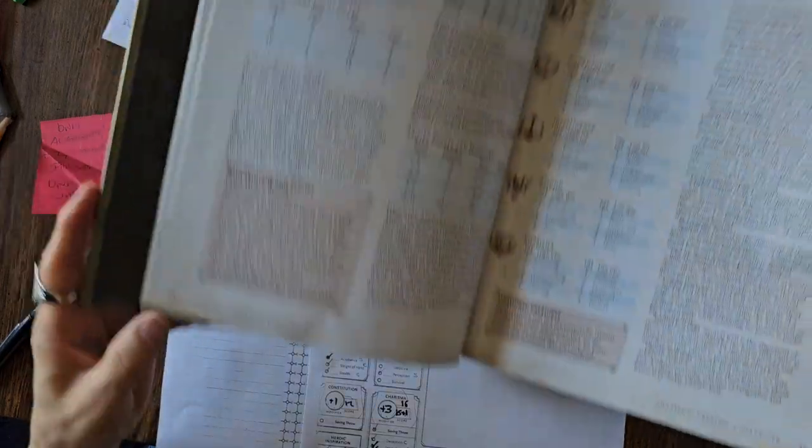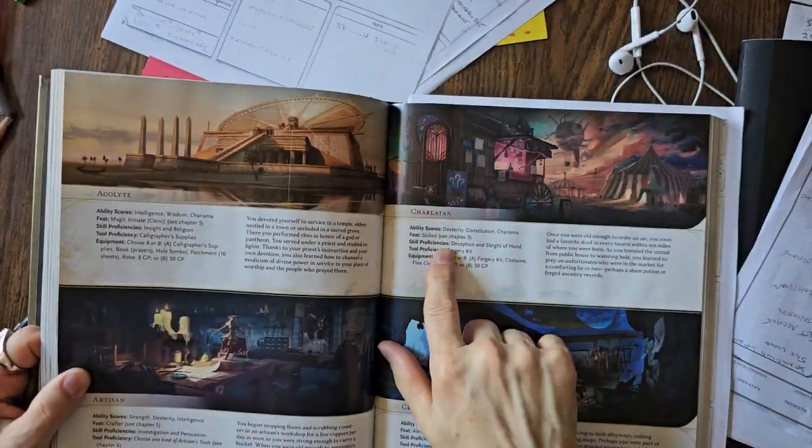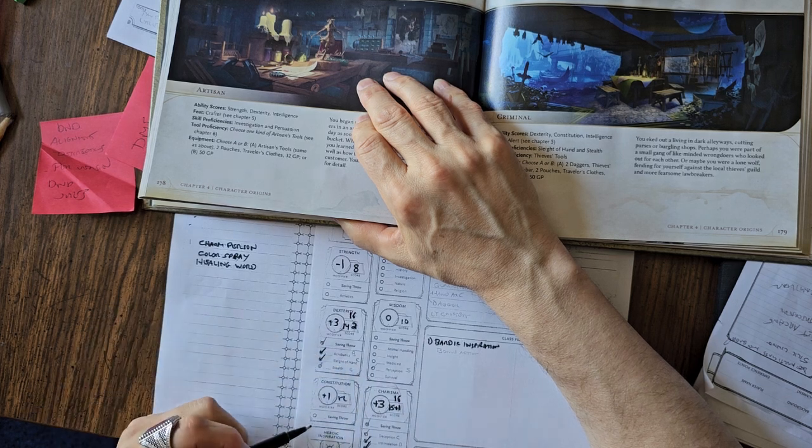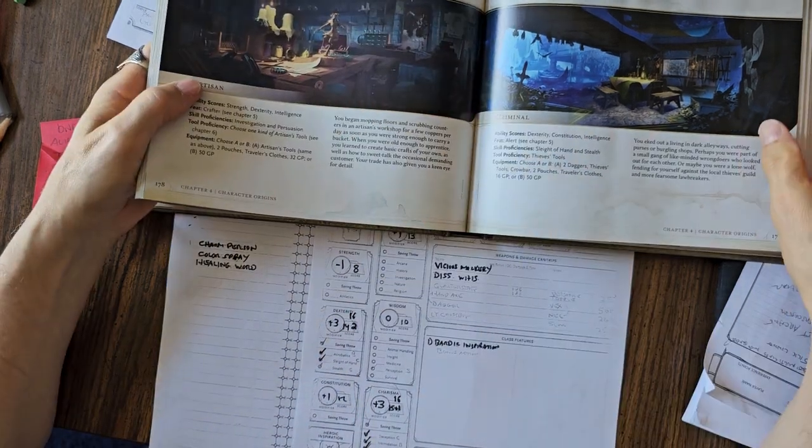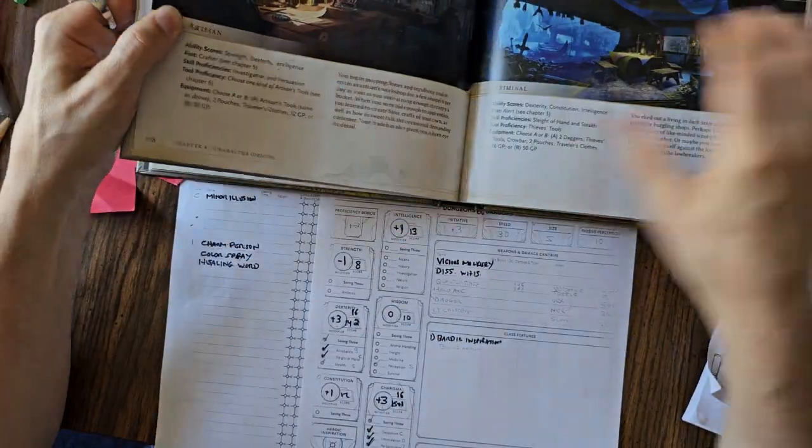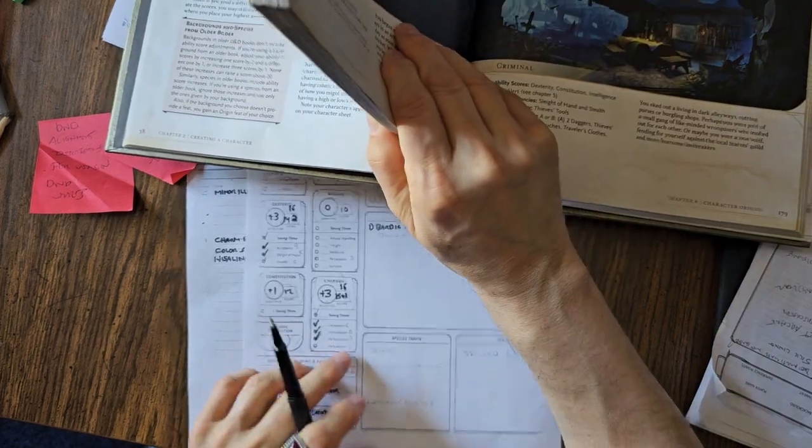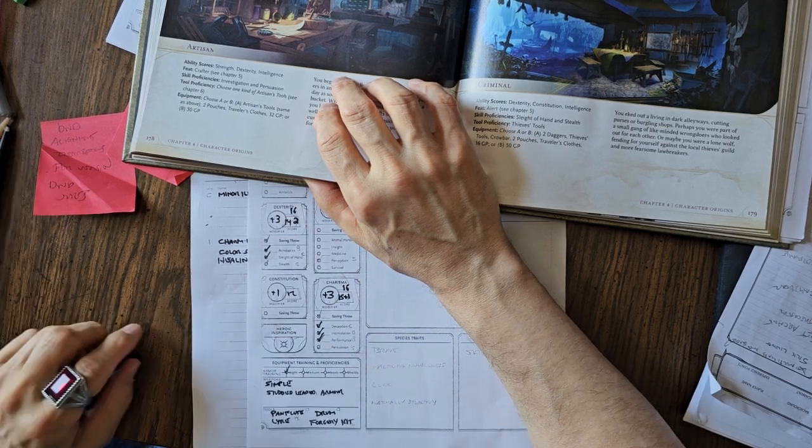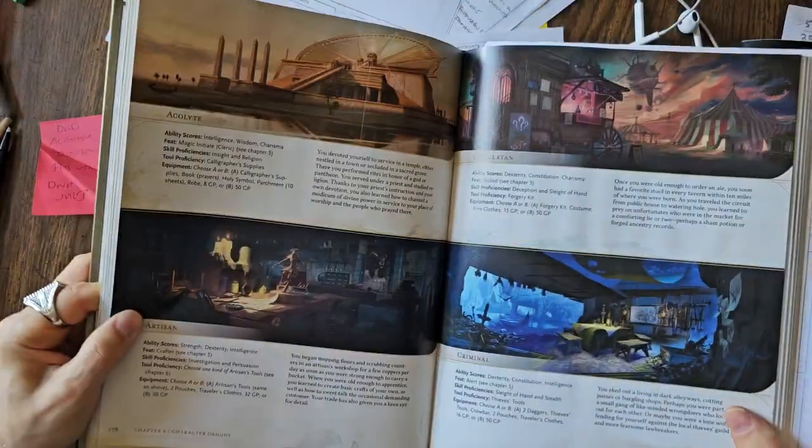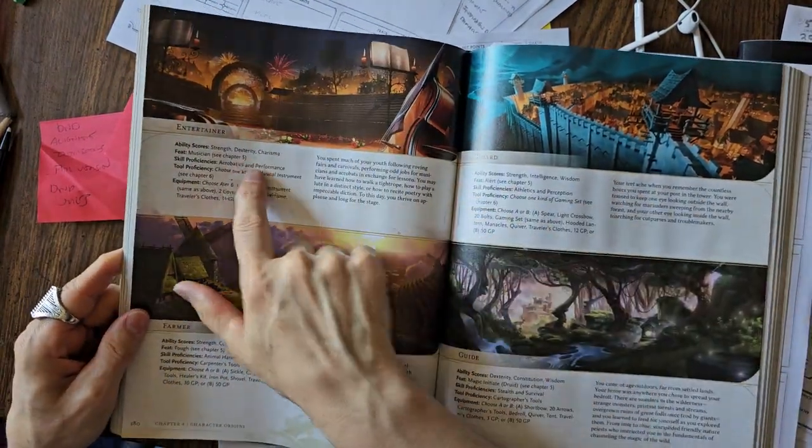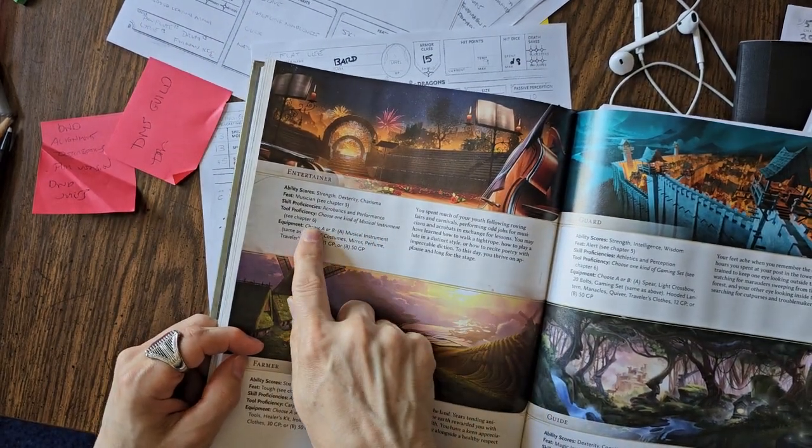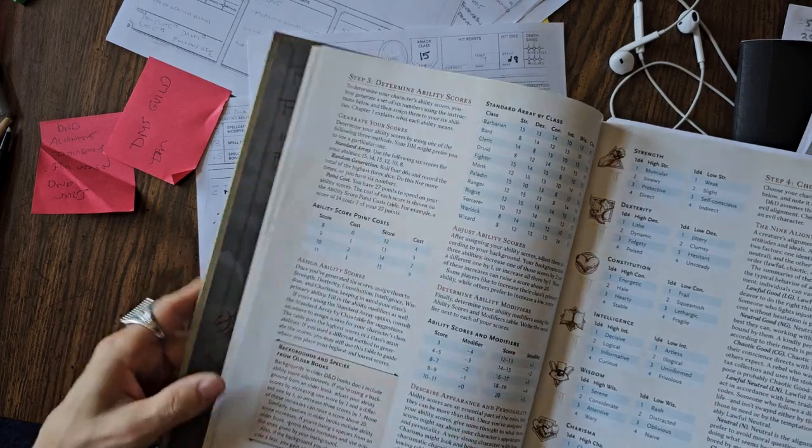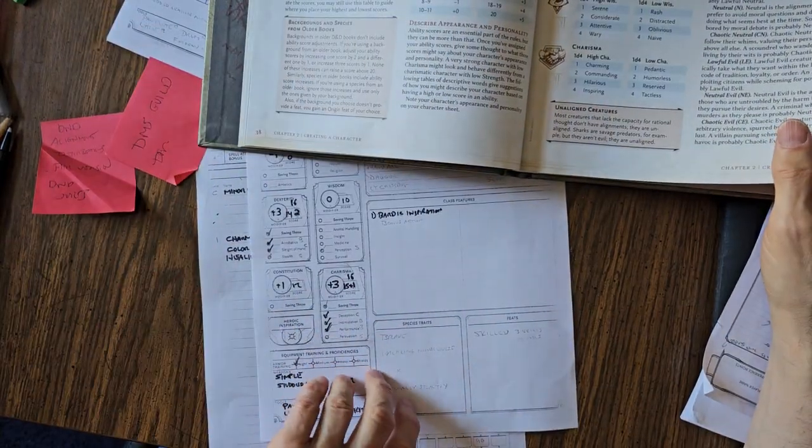The other thing that we can do with our charlatan background is we get skill proficiencies in Deception and Sleight of Hand. So we can go ahead and check mark Deception and Sleight of Hand as having proficiency. We also get a tool proficiency, which is a forgery kit. That could be interesting. It doesn't necessarily go right hand in hand with a Dance Bard, but it doesn't go against it either. You could have taken the Entertainer background, but Entertainer background - your tool proficiencies are musical instruments and Acrobatic and Performance are your skill proficiencies. We already took those because of our bard background.